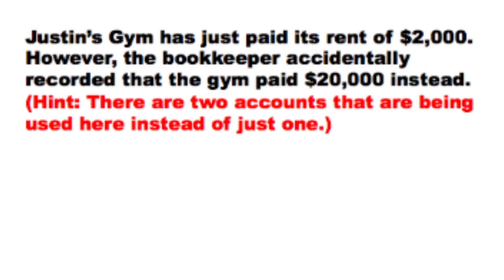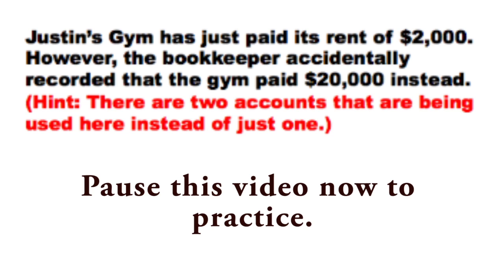Let's try another example to demonstrate this. Justin's firm has just paid his rent of $2,000. However, the bookkeeper accidentally recorded them as having paid $20,000 instead of the correct amount of $2,000. To answer this question, let's think about what the correct journal entry would have been. The correct entry would have been to credit the cash account for $2,000 and to debit the rent expense account for $2,000.